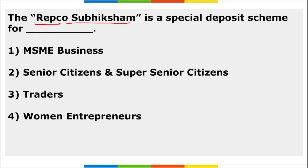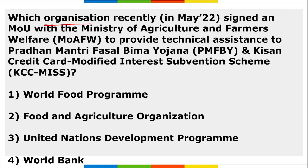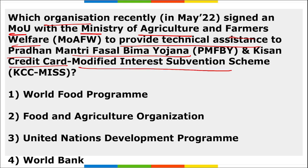Repco Subiksham is a special deposit scheme from Repco Bank targeting senior citizens and super senior citizens. UNDP — United Nations Development Programme, headquartered in New York — signed an MoU with the Ministry of Agriculture and Farmers' Welfare to provide technical assistance to PM Fasal Bima Yojana and Kisan Credit Card Modified Interest Subvention Scheme.